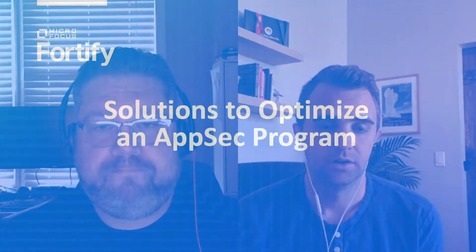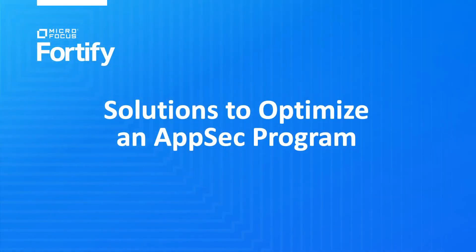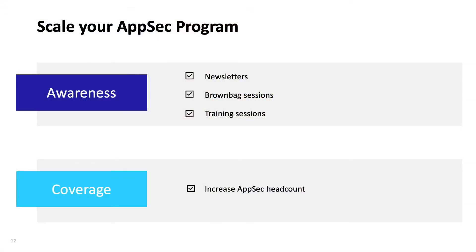Speaking of tools, what are some solutions people should be looking for when striving to mature and optimize their AppSec program? Earlier I mentioned awareness and coverage — there are a few different aspects to each. For awareness: newsletters, brown bag sessions, and training courses are three great ways to build it. With newsletters, you can tailor those to specific areas of focus by including news articles or helpful tips. Brown bag sessions are informal ways to get interested folks to learn about AppSec topics in an interactive setting.